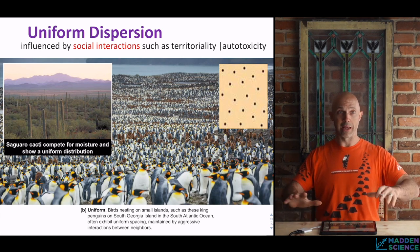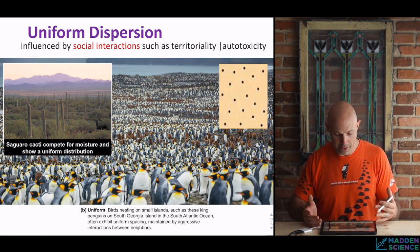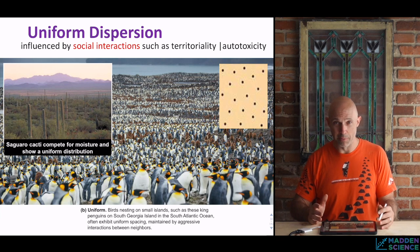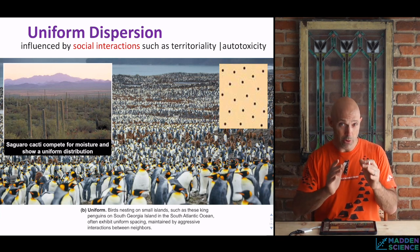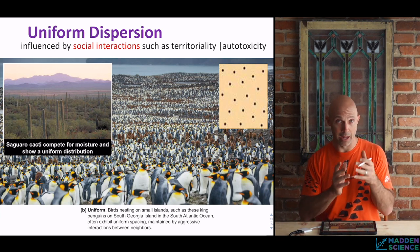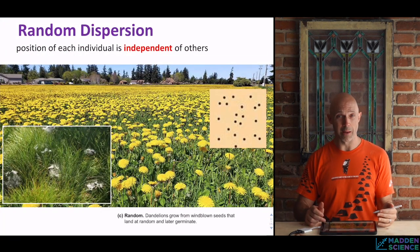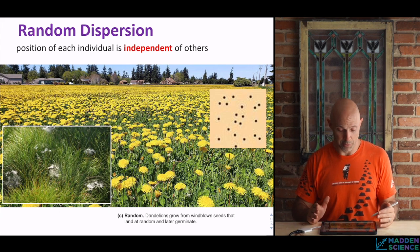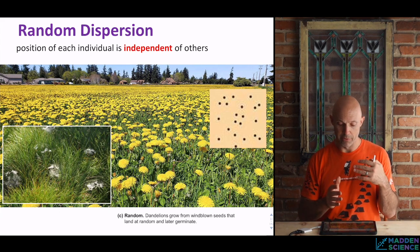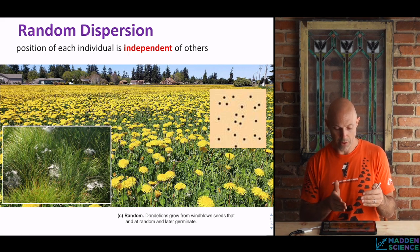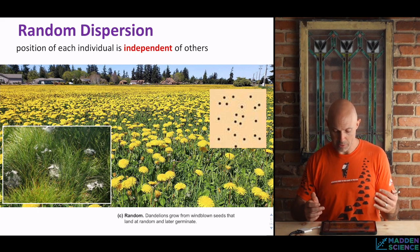Uniform dispersion is influenced by social interactions like territoriality or auto-toxicity, where organisms must stay a certain distance apart due to waste accumulation — penguins from South Georgia Island or saguaro cacti are beautiful examples of pretty uniform distribution based on resource availability and social interactions. Then sometimes you get random dispersion, where the position of individuals is independent of others — spiders or dandelions might be examples of random distribution.